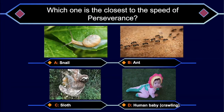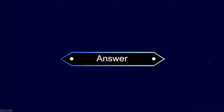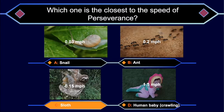A little trivia: which is closest to the speed of the Perseverance rover — a snail, a sloth, a human baby? That's my baby, by the way — she's already five now. The answer is the sloth. The rover's speed is 0.1 miles per hour, just slower than a sloth at 0.15 miles per hour. A human baby is about 10 times faster than a sloth.